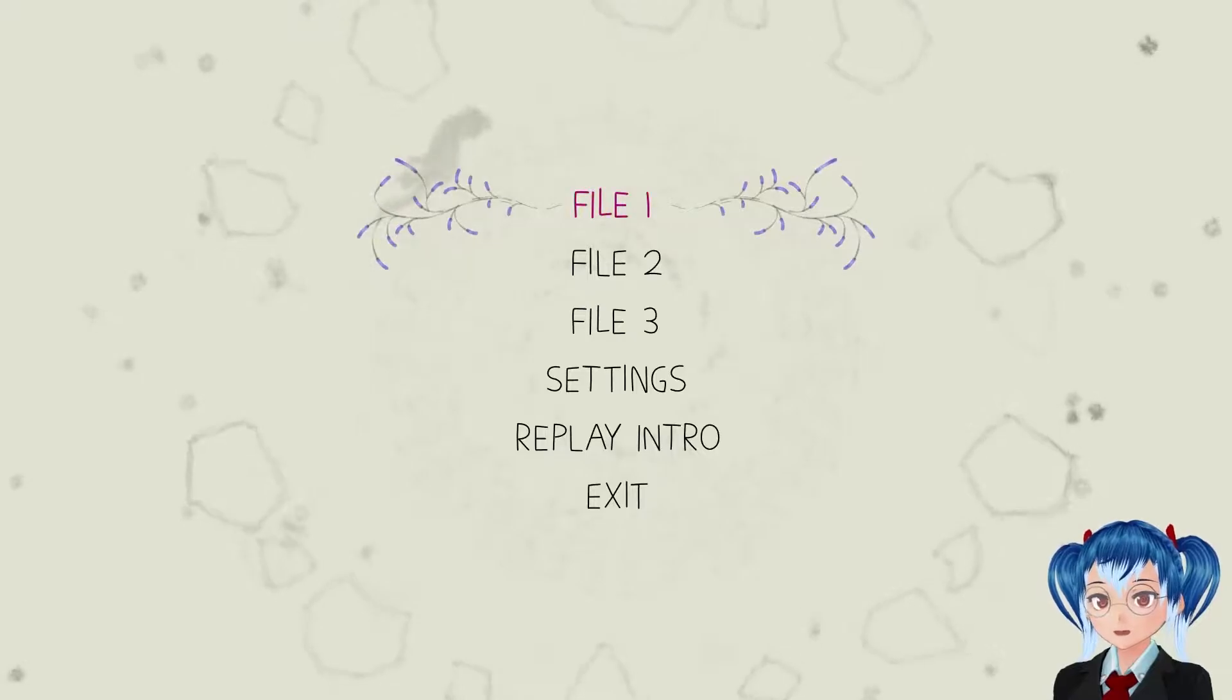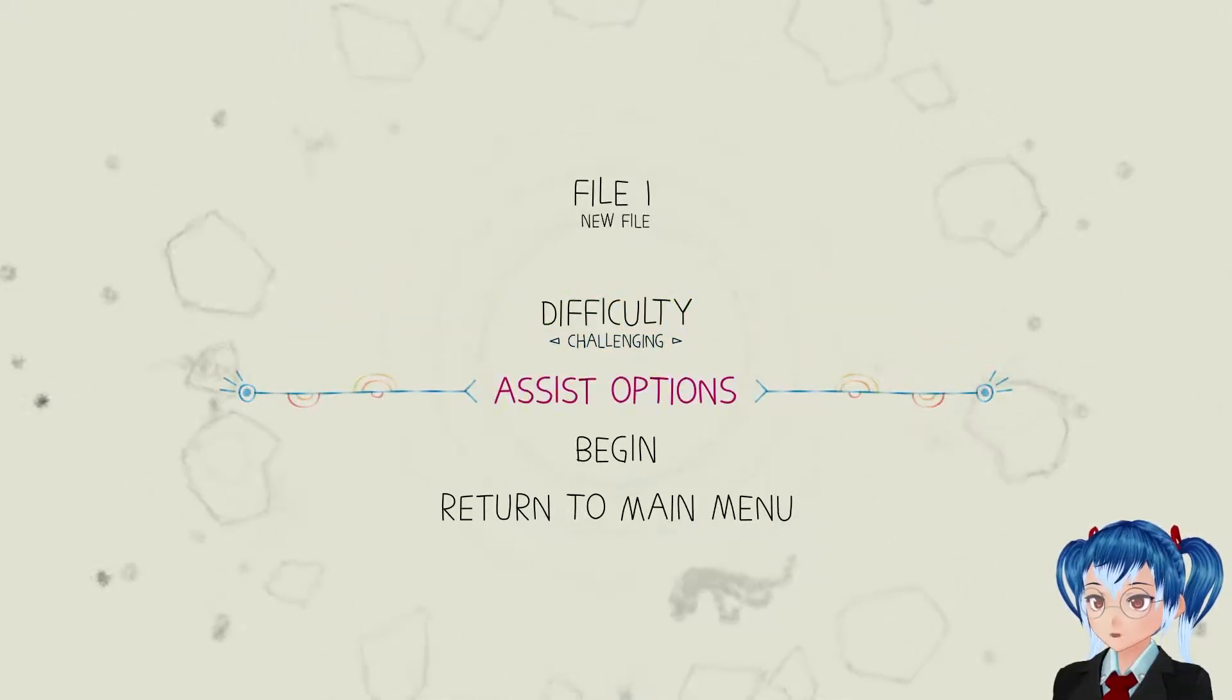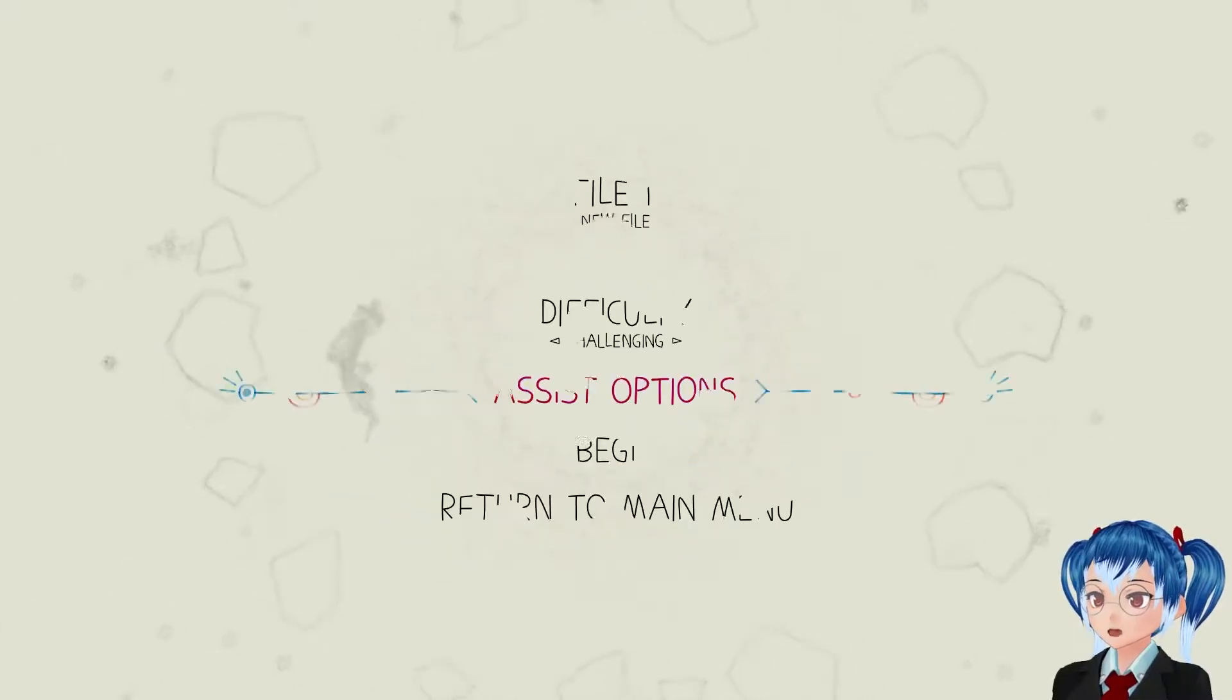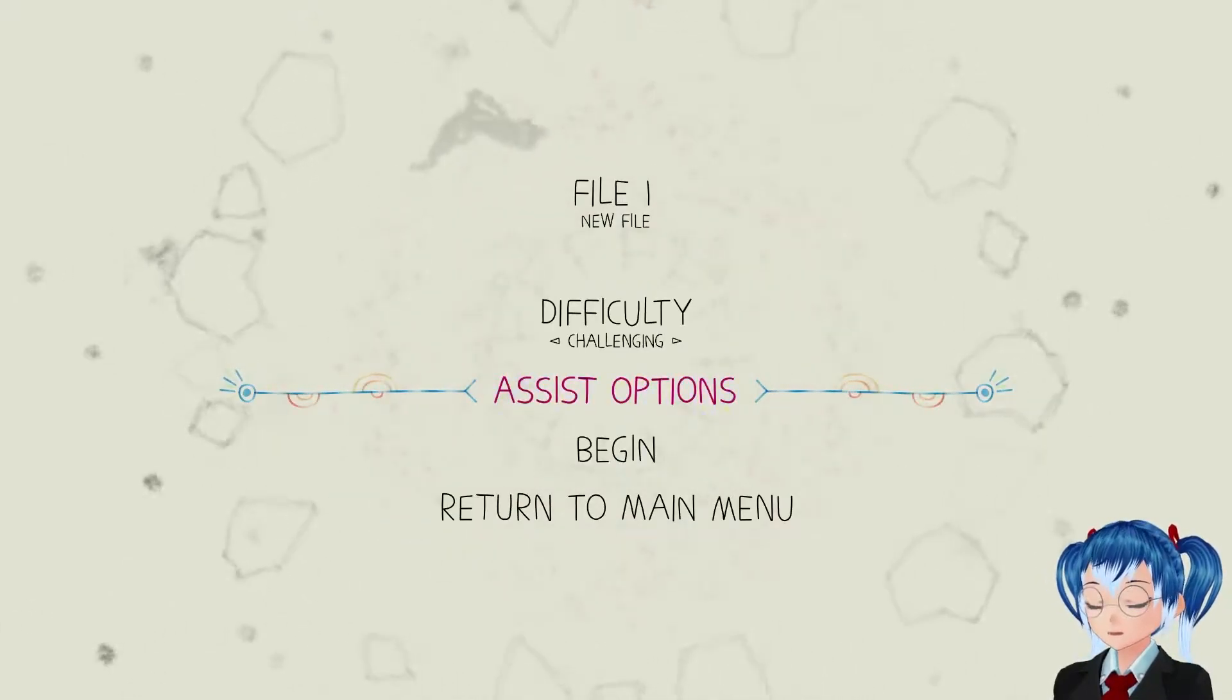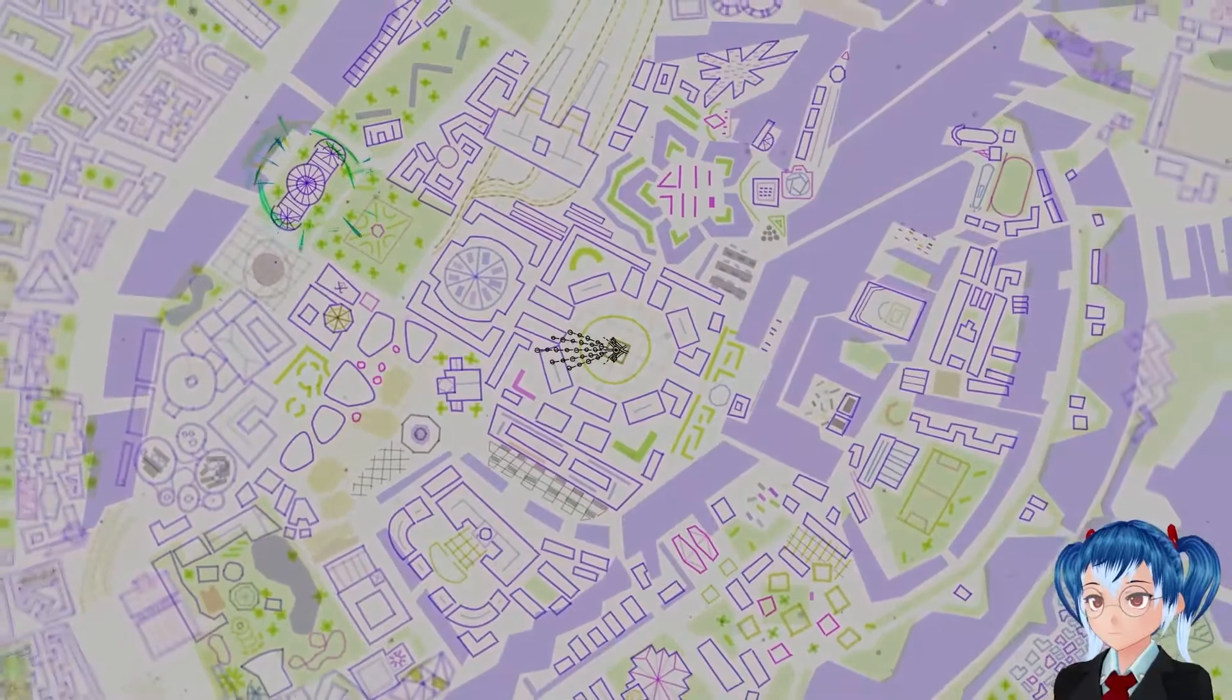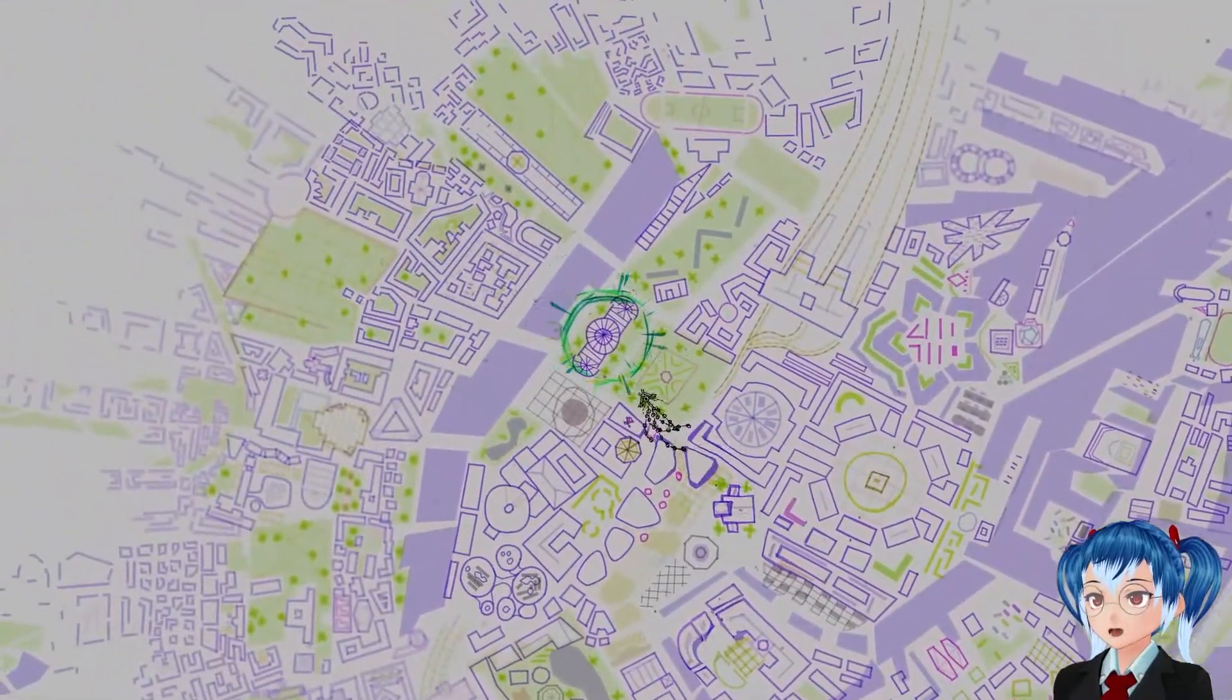Hang on, let me reposition myself. We're back, I'm down here now. Let's try file one. Difficulty challenging, too difficult? Okay, let's just do this. Assist options, no I'm okay. This requires the use of a controller. I'm here with an Xbox One controller and we're just gonna see what this is about.